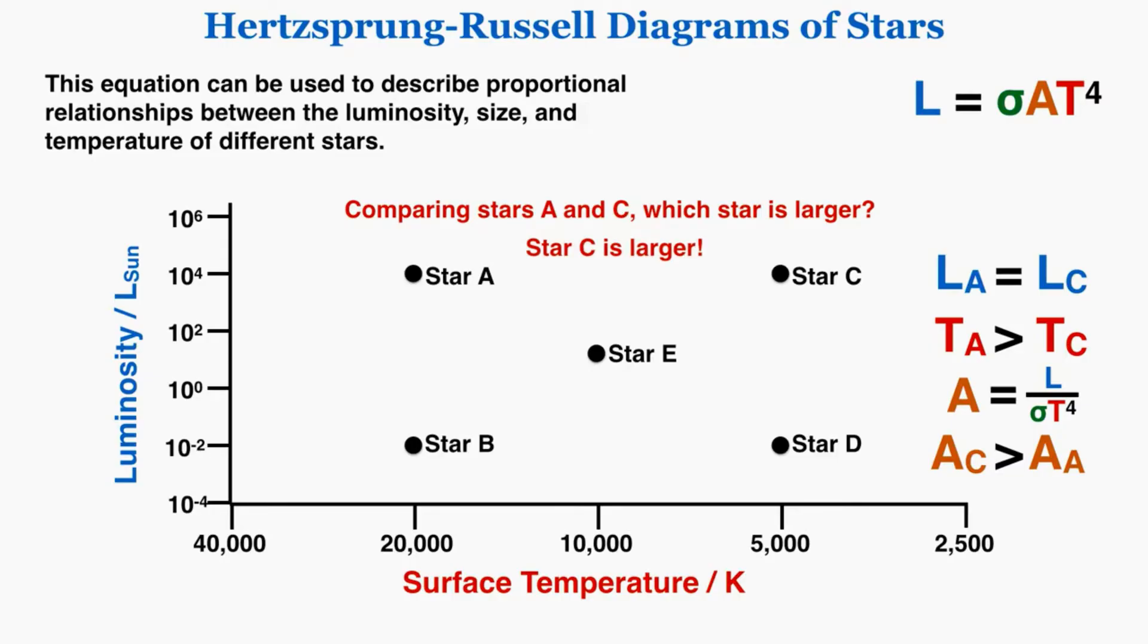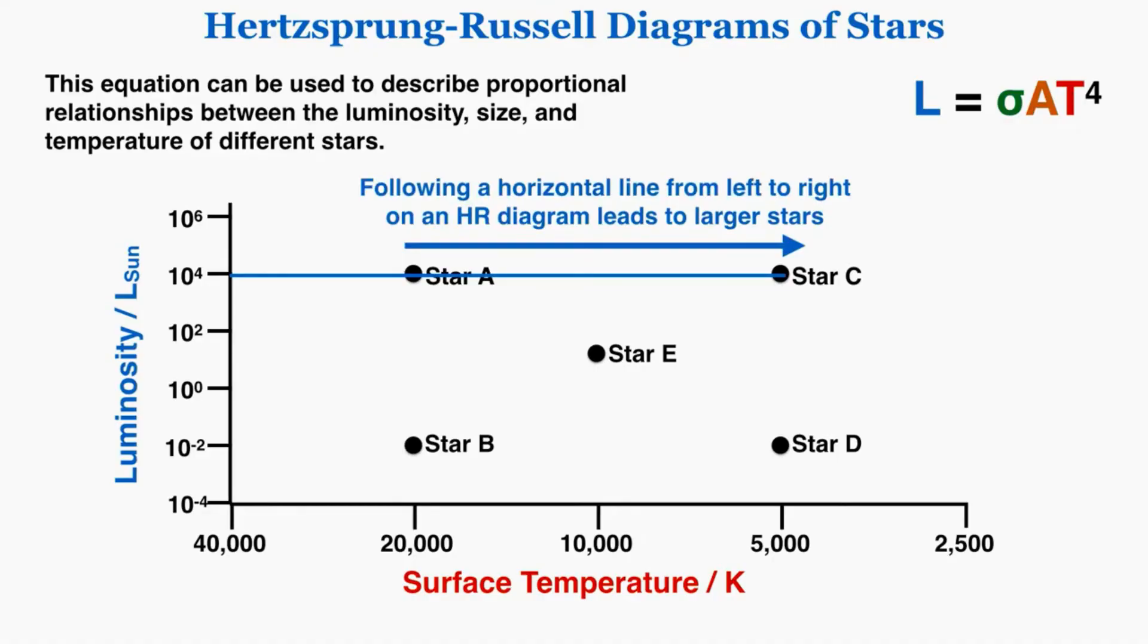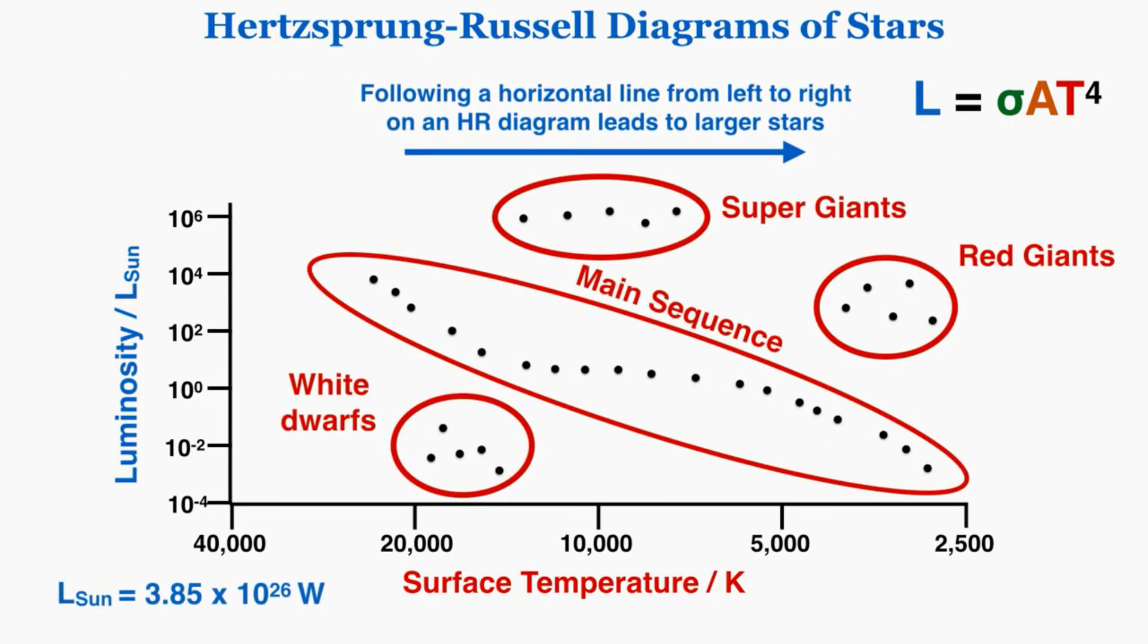To get that information I used information from the diagram and the equation L equals the Boltzmann constant times area times temperature to the fourth. Based on that pattern, following a horizontal line from left to right on an HR diagram leads to larger stars. This fits our understanding because if we look back here we can see that as we go from left to right we do get larger and larger stars.